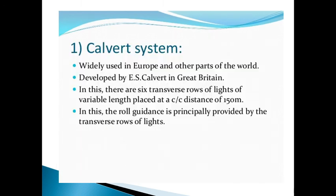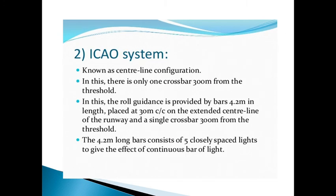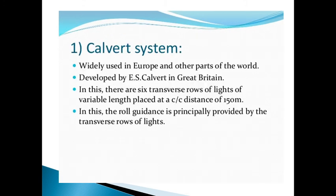In the figure you can see an aircraft about to land near the threshold marking. On both sides of the runway, lights are provided so that the pilot can identify exactly where to land. The lighting for the landing system is divided into two: the Calvert system and the ICAO system.